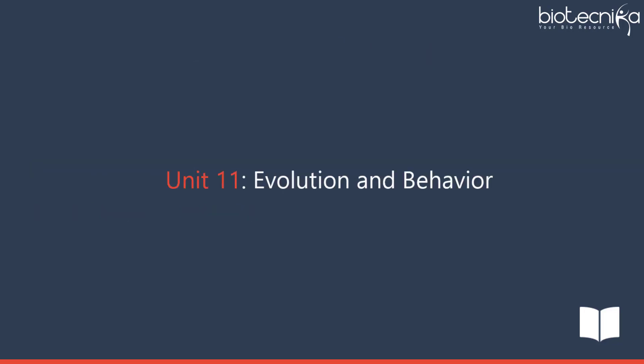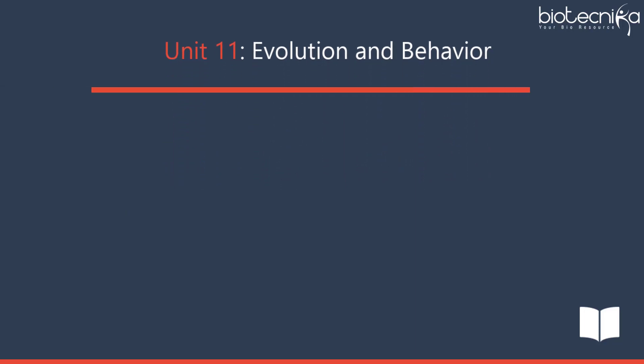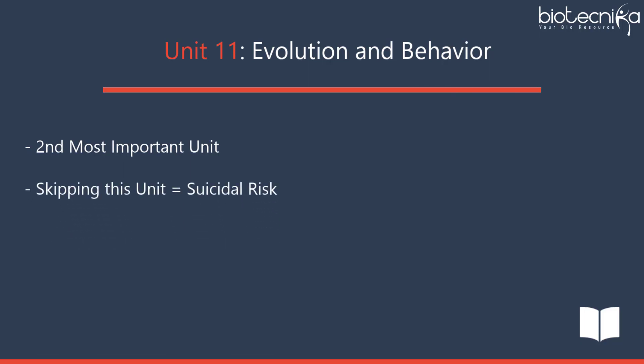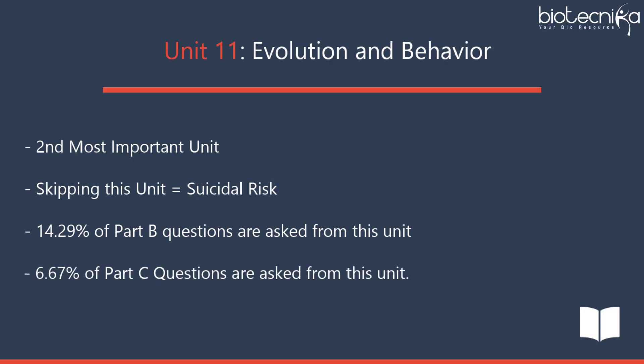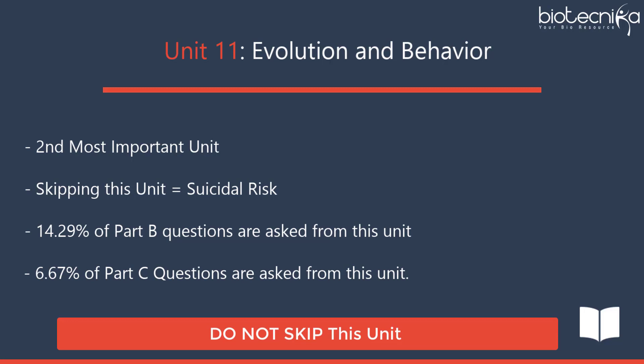Unit 11 – Evolution and Behavior is historically and strategically one of the second most important units. Skipping this unit is a suicidal risk. 14.29% of Part B questions and 6.67% of Part C questions are asked from this unit.